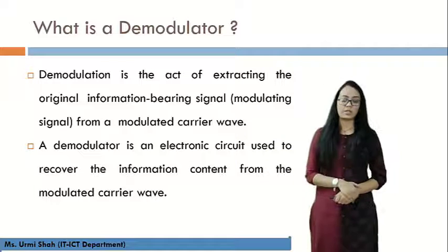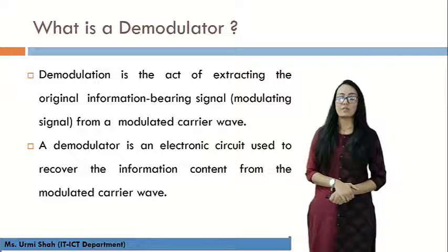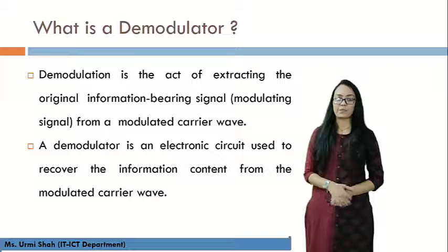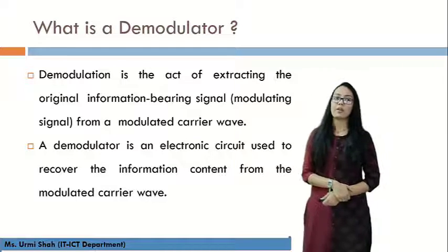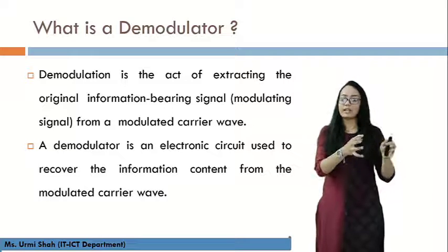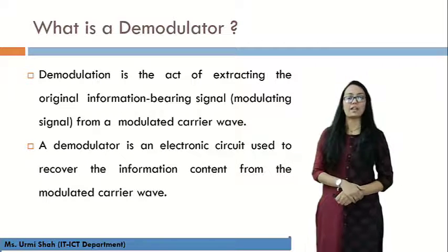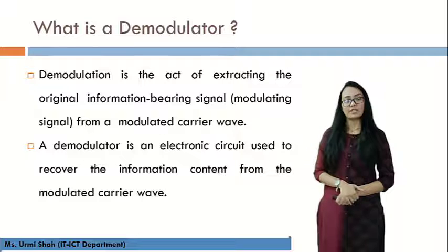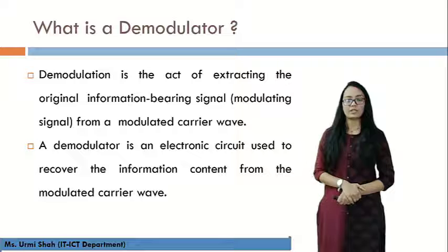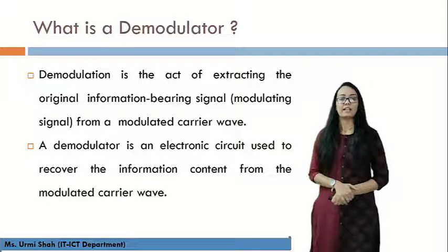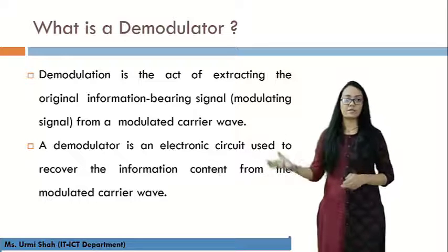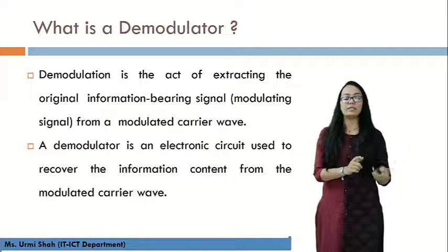So basically, what is demodulation? Demodulation is the act of extracting the original information — that is, the message signal — from a modulated carrier wave. Whatever signal we modulate and transmit from the transmitter end to the receiver end, at the receiver end we need to retrieve that original signal. That retrieval of information is known as demodulation, and a demodulator circuit is an electronic circuit used to recover the information content from the modulated carrier wave.